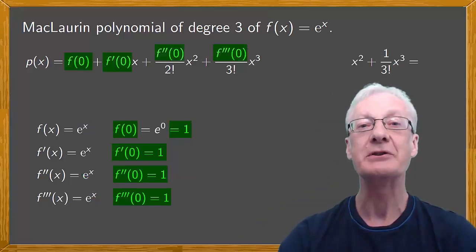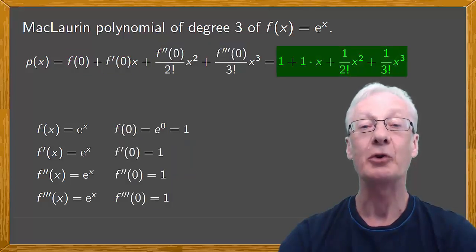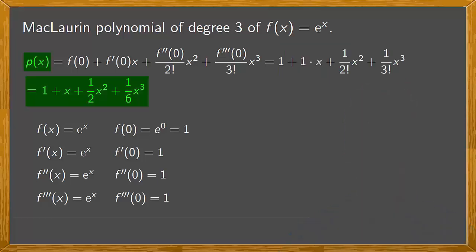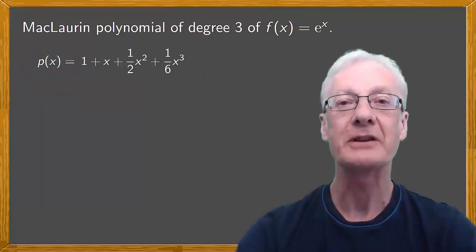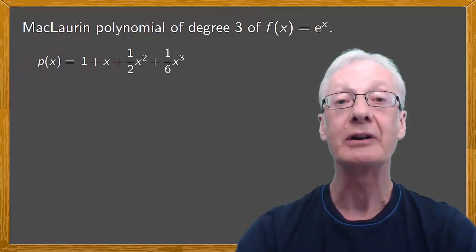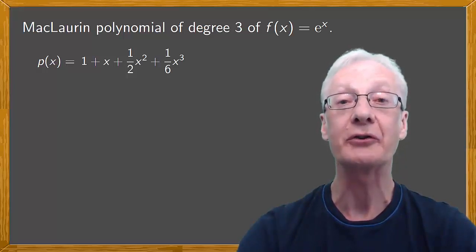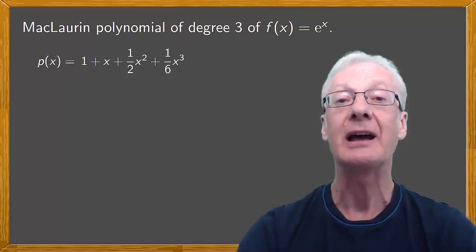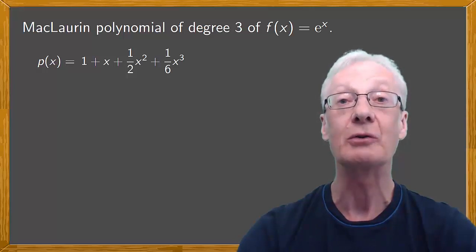Finally, we substitute in the expression for the polynomial and there it is. If we work out the factorials, we'll obtain this polynomial. As we know, this is a polynomial of degree 3 and it's the only one that satisfies the condition that the image and the derivatives up to order 3 of this polynomial and the function at 0 coincide. This polynomial will give us good approximations of f(x) close to 0.